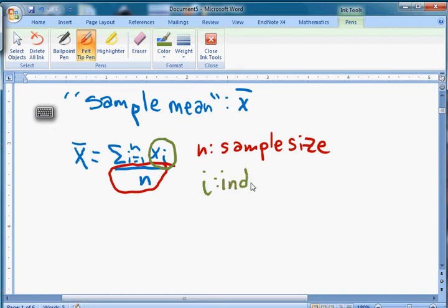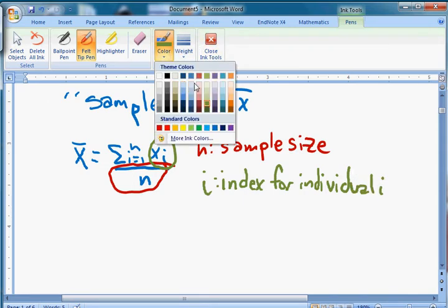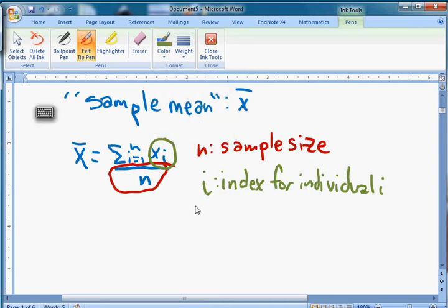Think of this like an ID number. I often describe it as deli tickets, and that means that i is an index for individual i. That's the way we put it. So i indexes individuals within the sample, within the population. So in this case, since we're talking about heights, it's probably people, although I guess we could talk about heights of prize cows or something.